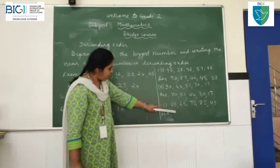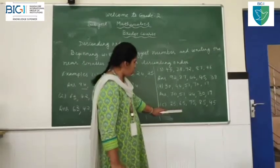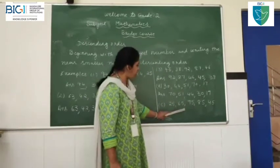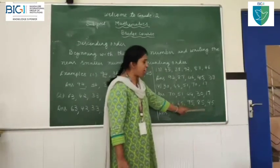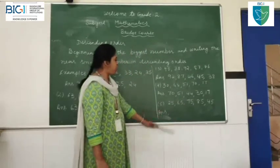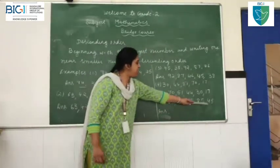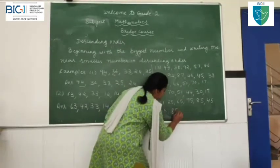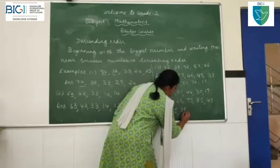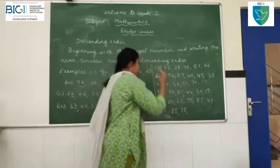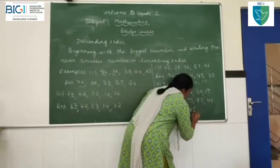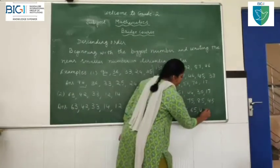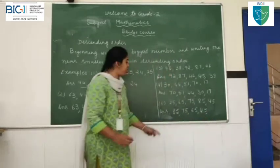I hope you understood. Now I go to the fifth example: 25, 65, 75, 85, 45. Which number should I start with? The highest number is 85. After 85, 75. After 75, 65. After 65, 45. After 45, 25.